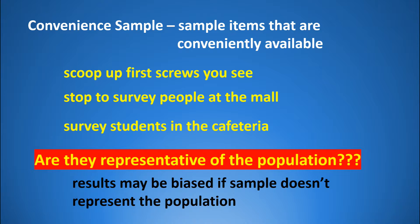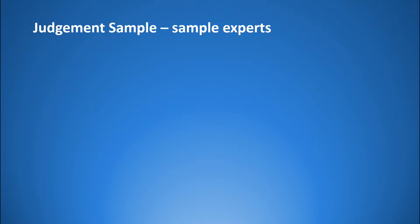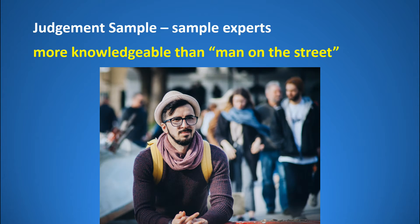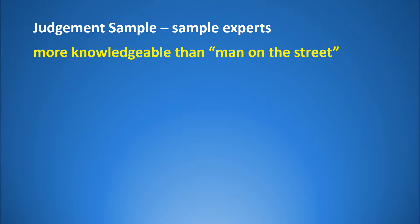Another type of non-probability sample is called a judgment sample. This is where you sample experts in a field and ask their opinion. While they may not be representative of the population, they are very knowledgeable and can give you more information than your typical person on the street. So while you can't generalize the results of a judgment sample, you can use it to structure a more scientific follow-up study.